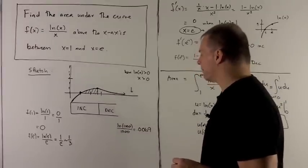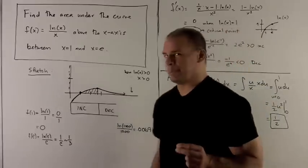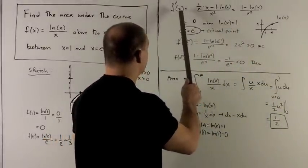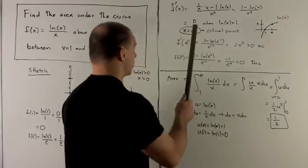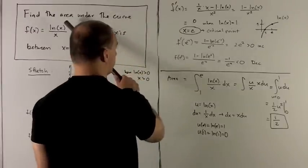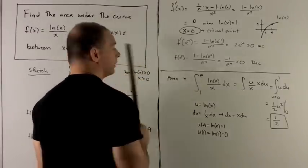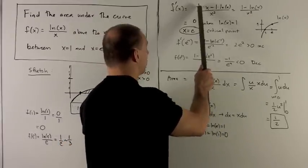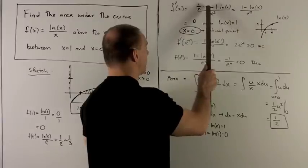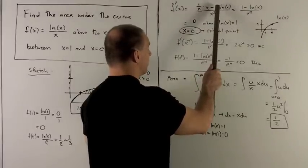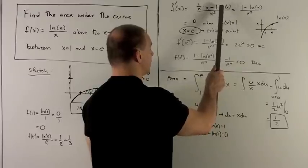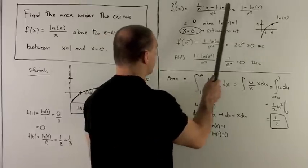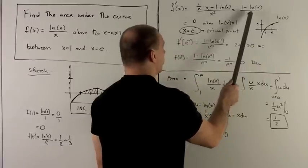Now let's take a look at the first derivative and critical points — that'll be enough to get an idea of the graph. Taking the derivative of f using the quotient rule: the derivative of ln(x) is 1/x, times the bottom, minus the derivative of the bottom (which is 1) times the top (which is ln(x)), all over the bottom squared. Putting this together gives me (1 - ln(x)) / x².